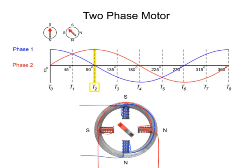At time 2, phase 1 reaches zero current flow, while phase 2 reaches maximum current flow. This causes the rotor to turn 45 degrees counterclockwise to align itself with the horizontal poles.